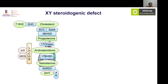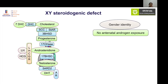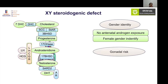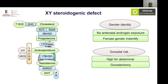Moving to XY steroidogenic defects: defects above the LH/CG receptor — such as side chain cleavage, StAR, dihydrocholesterol defects, or 3-beta-HSD — will result in no antenatal androgen exposure to the brain. Therefore, the gender of rearing can mostly be female. Since these patients have no androgens, their testes will be high up in the abdomen, predisposing them to high risk of malignancy; hence gonadectomy is advised.